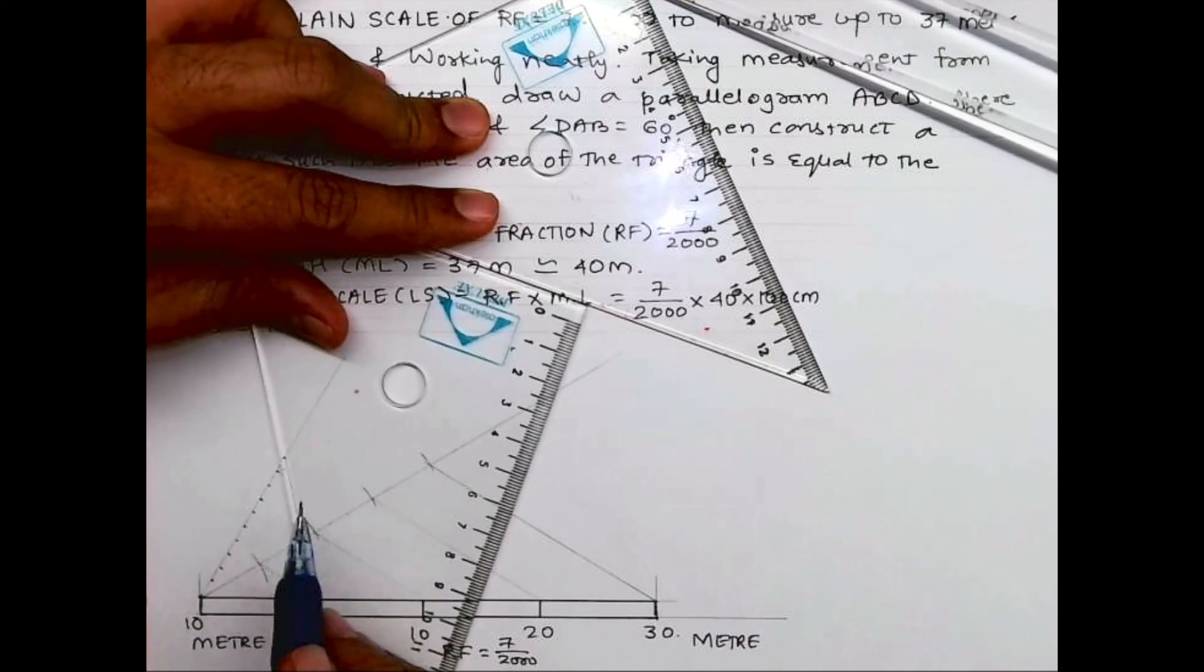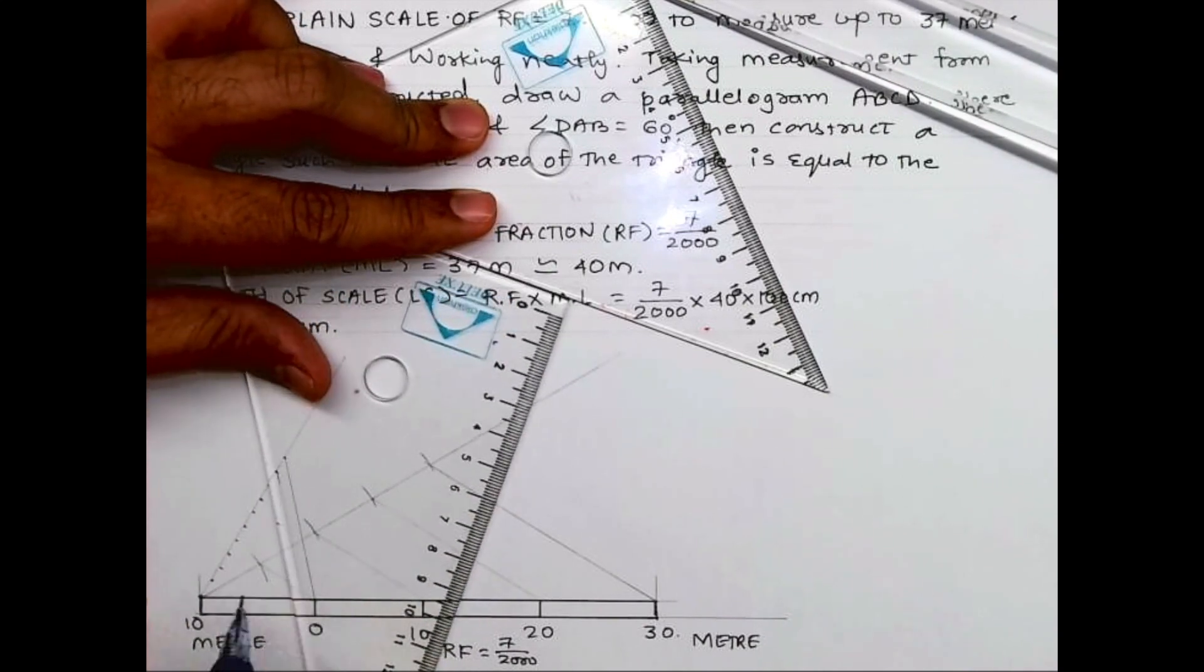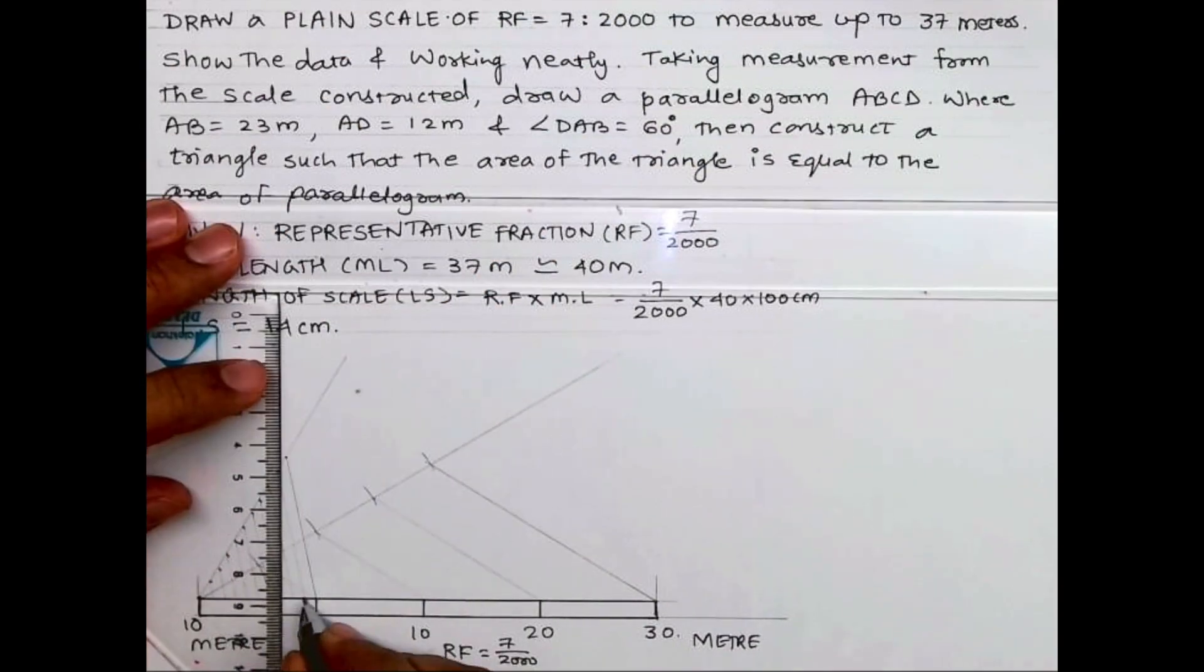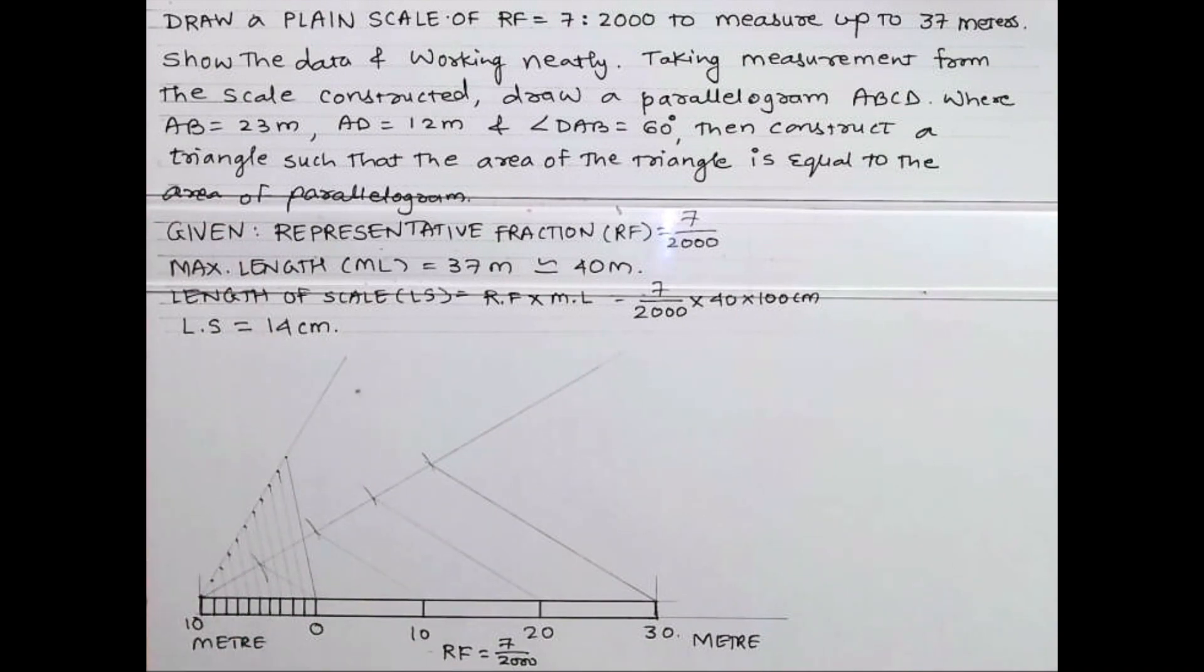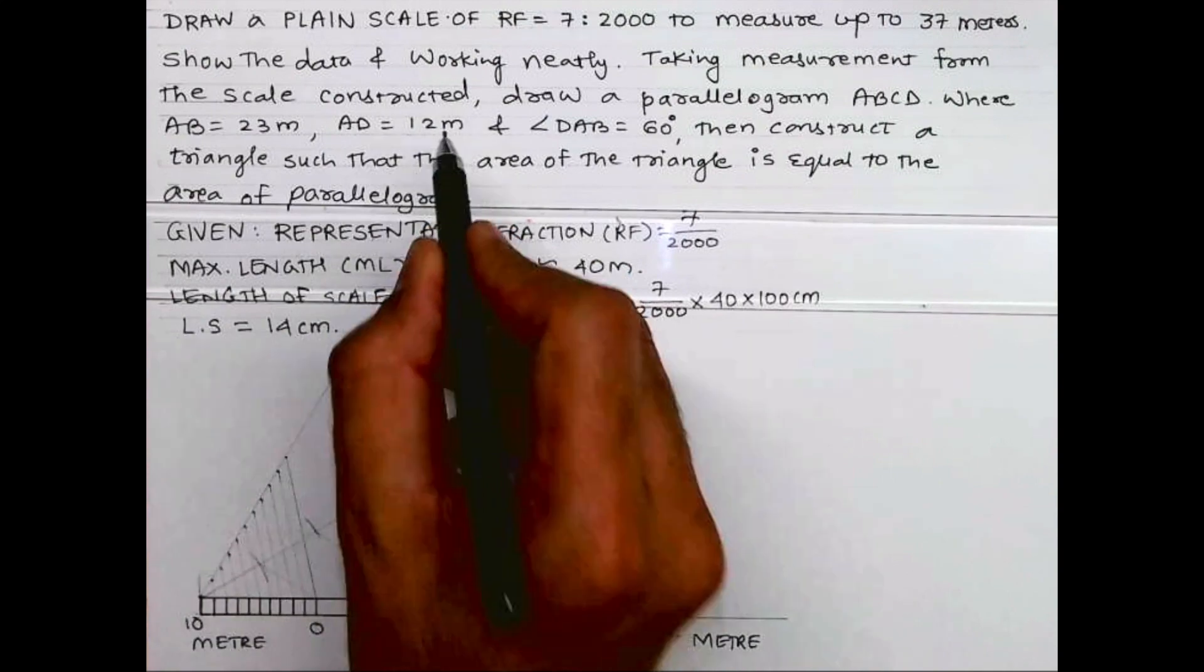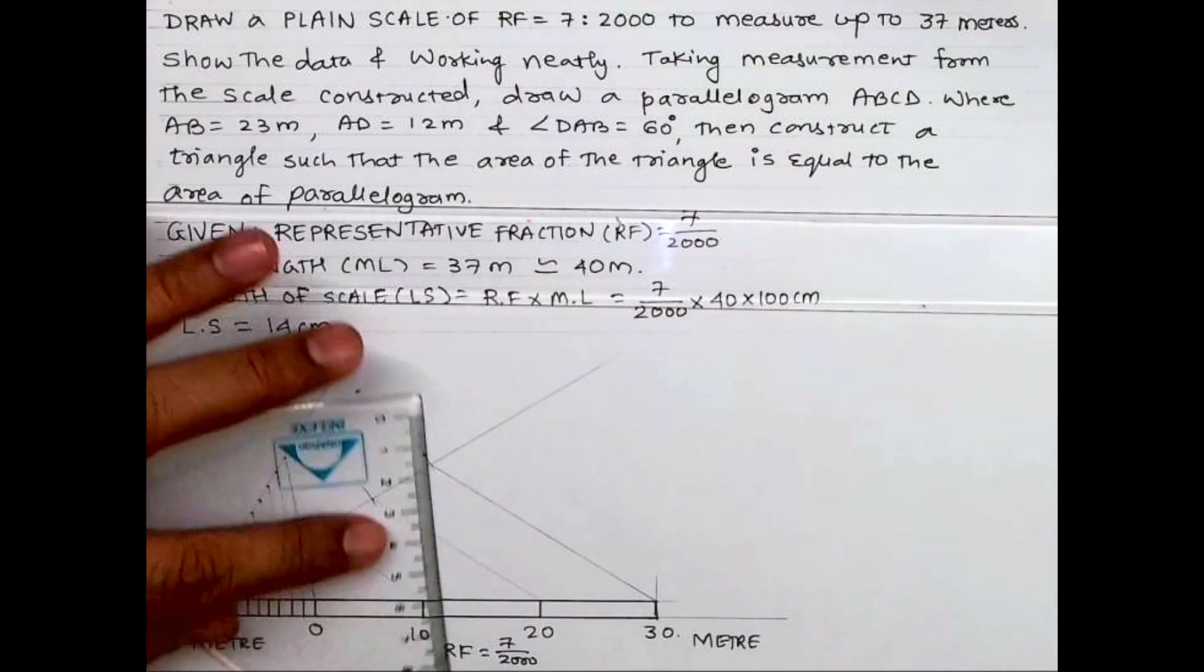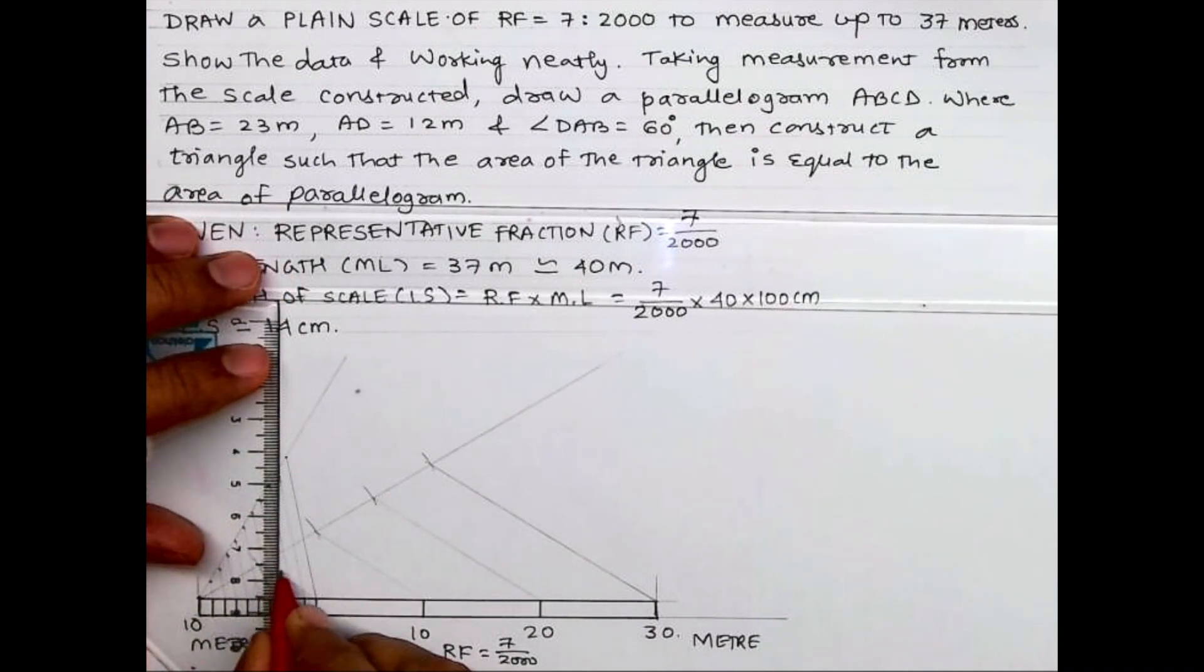Now we need to mark 23 meter and 12 meter. After drawing this line we will draw parallel line. This way we have divided the first block into 10 parts. Now we need to mark 23 meter and 12 meter. So for 23 we need to take 20 plus 3. One, two, three - we will take 3 from left side and 20 from right side.